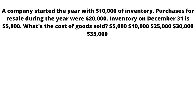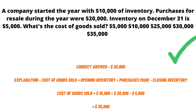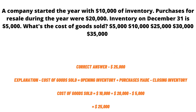The correct answer is $25,000, because the formula for cost of goods sold is opening inventory plus purchases made minus closing inventory. So the cost of goods sold is $10,000 (opening inventory) plus $20,000 (purchases made during the year, as given on the second line) minus $5,000 (closing inventory), leaving us with $25,000. So the correct answer for cost of goods sold is $25,000.